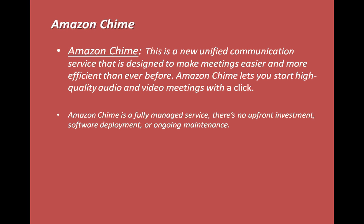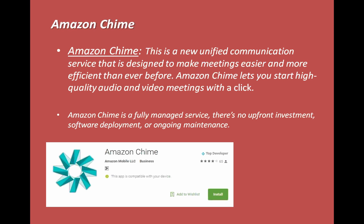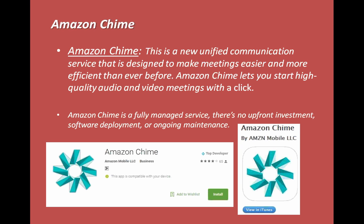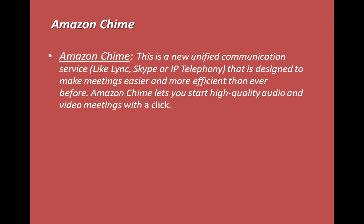Amazon Chime is available on the Google Store and Apple Store. You can download it and use it for basic one-on-one chats and calling, as well as sharing your screens and videos. It is a new unified communication tool, like Skype or telephony, which is designed to make online meetings easier to connect and provide high quality audio and video to enterprise users.